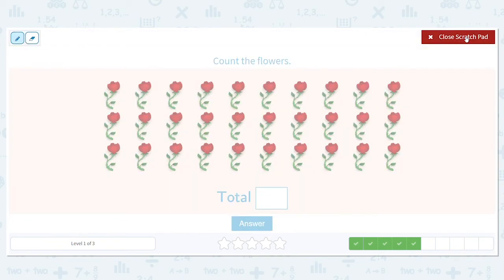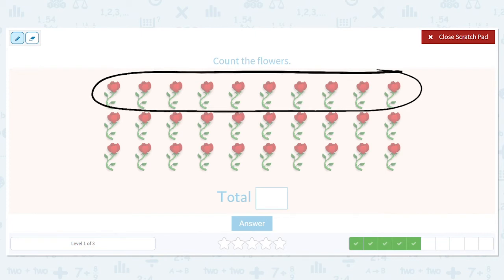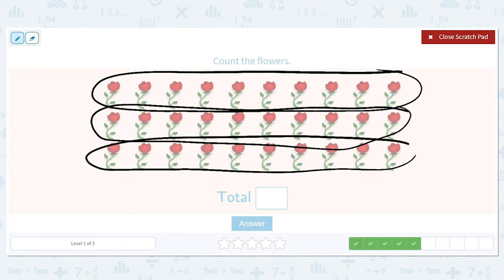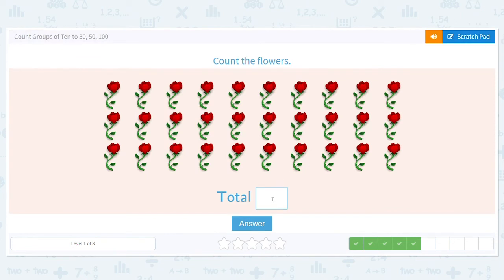What do we do? Circle it. There's one row of 10. Do we have another row of 10? Absolutely circle it. And do we have another row of 10. We do. We have another row of 10. So let's count by 10s. We have 10, 20, 30. So how many total flowers do we have? We have 30.